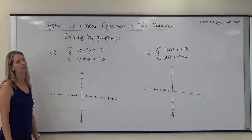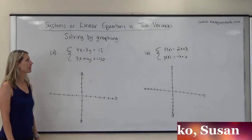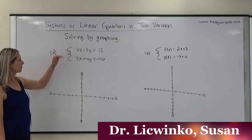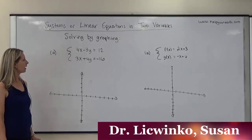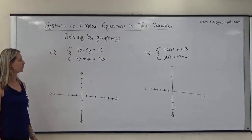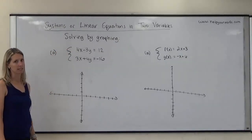In this video, we're going to look at solving systems of equations by graphing. Here we're given our system of equations: 4x minus 3y equals 12, and 3x plus 4y equals negative 16.